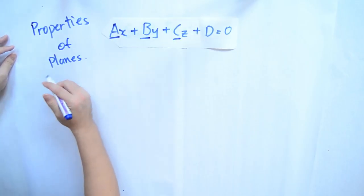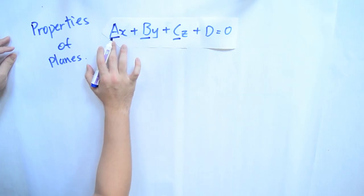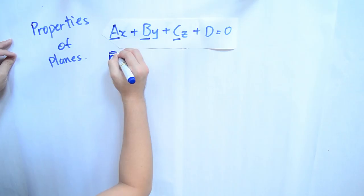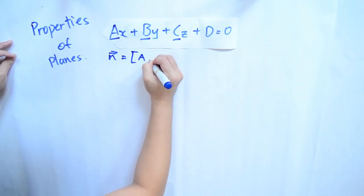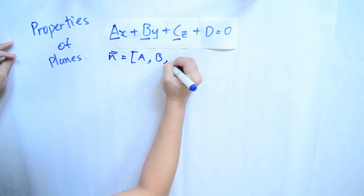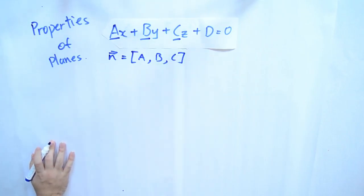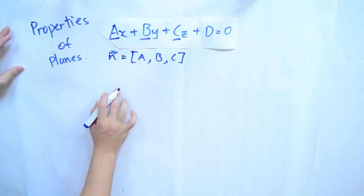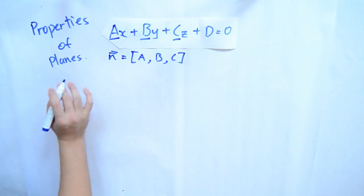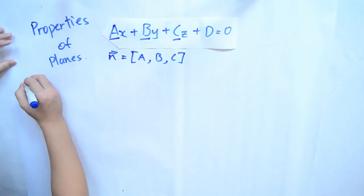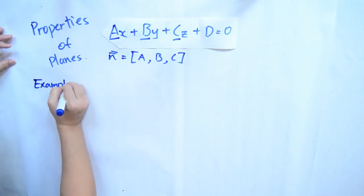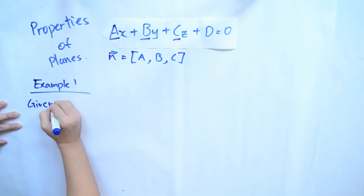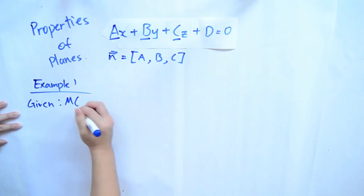Now we'll look in depth at the properties of planes. The scalar equation AX plus BY plus CZ plus D equals 0 has capital letters A, B, and C as the coefficients that define the normal to the plane. The normal vector is expressed as N with an arrow on top. Let's go through some examples to help us apply this equation.